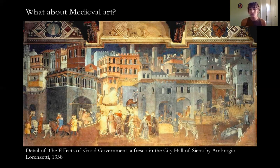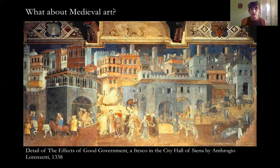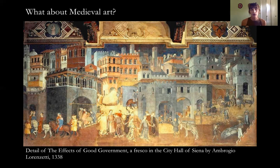Early historians who wrote about this period initially wrote about it in these terms — they felt like nothing good was happening in the art world or in the literature world. It was a time of darkness. And as you see here, this is a medieval piece from Siena right before the Renaissance period. You can see that linear perspective has not been invented yet, so there's no real understanding of how to represent a three-dimensional space on a two-dimensional surface.